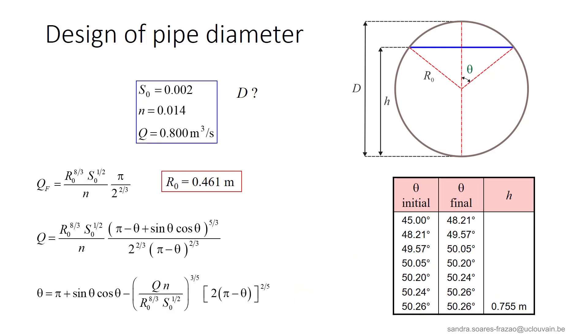For this value, we can then calculate by iterations the angle theta and the uniform depth. In practice, of course, we wouldn't just take this value of the pipe diameter. It will rather be rounded to the nearest entire value available on the market of precast elements, for example.